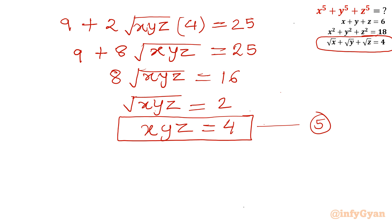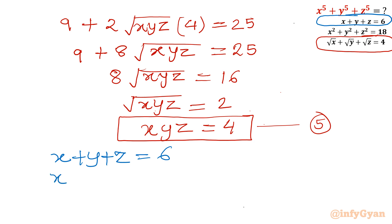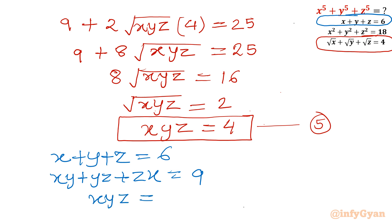We now have three equations: x + y + z = 6 (sum of roots), xy + yz + zx = 9 (sum of roots taken 2 at a time), and xyz = 4 (product of roots). So we can think about one cubic equation whose roots are x, y, and z.